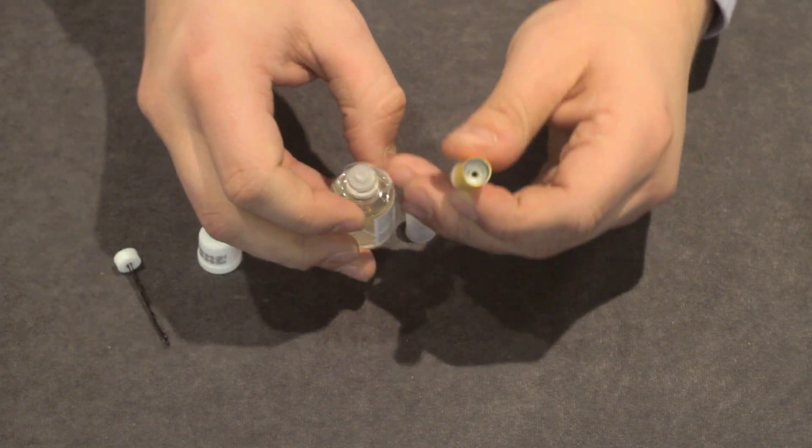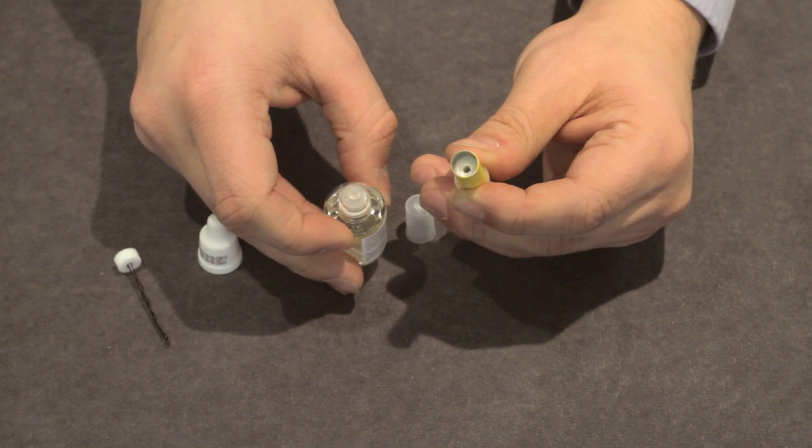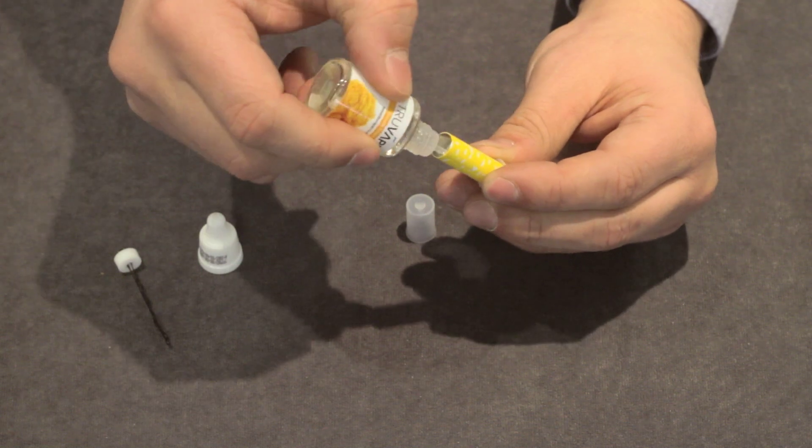Drop five to six drops onto the cotton wick, then allow a minute or so for the liquid to absorb. Then repeat the process.